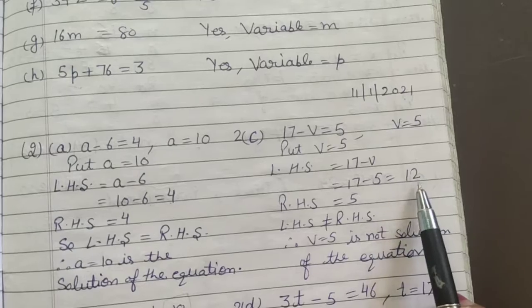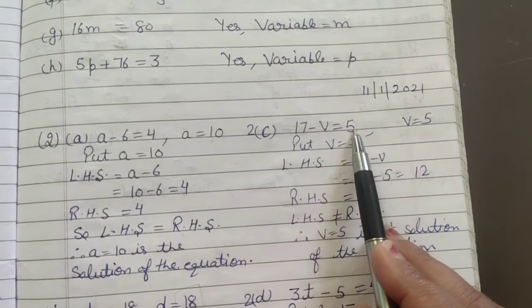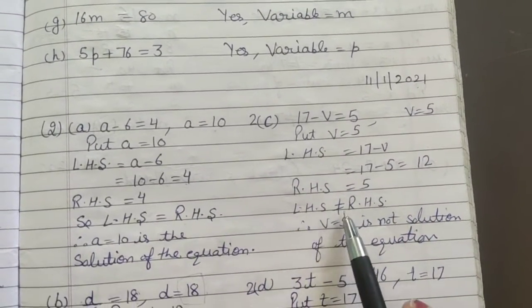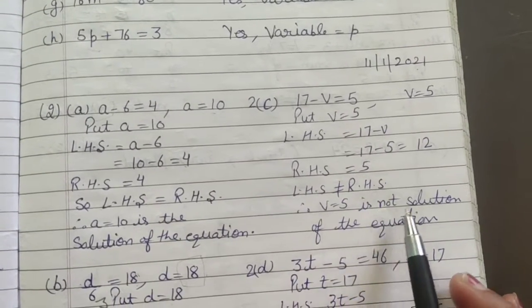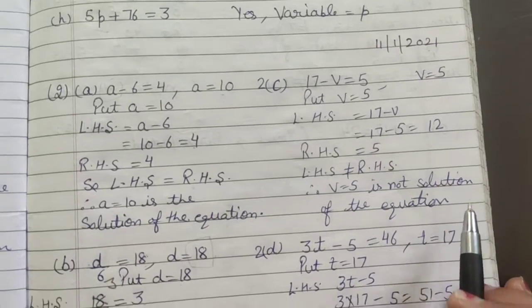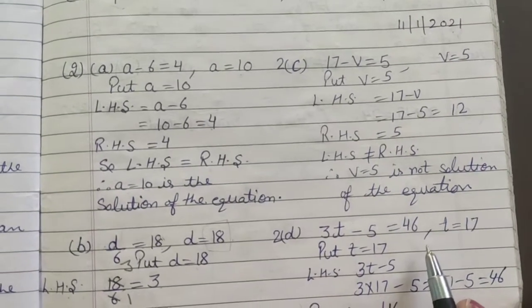17 minus 5 equals 12. But in right hand side we have 5. So it means left hand side is not equal to right hand side. So v equals 5 is not the solution of the equation. Okay, so now part d is for you as homework.